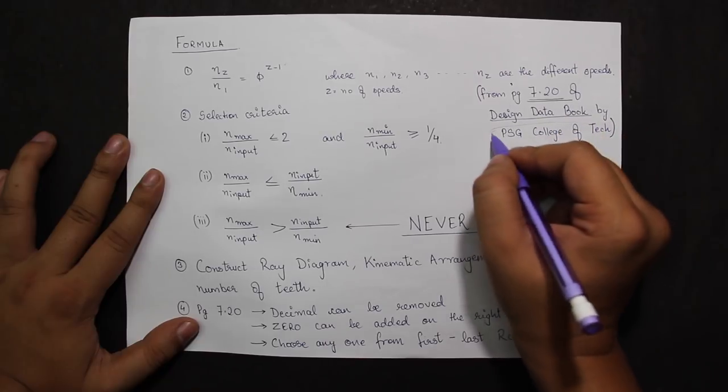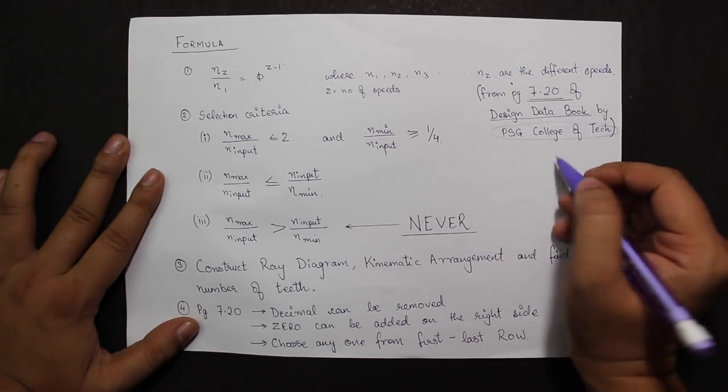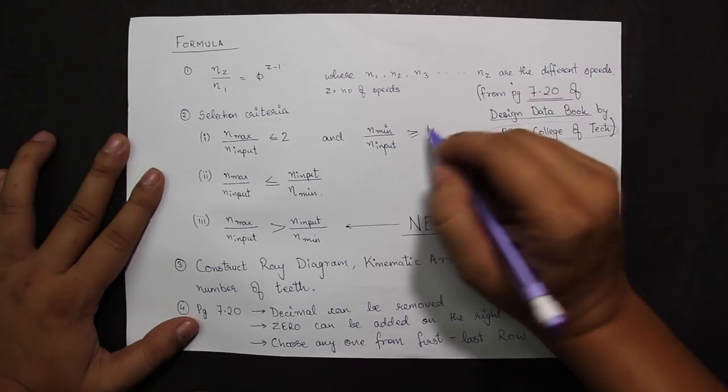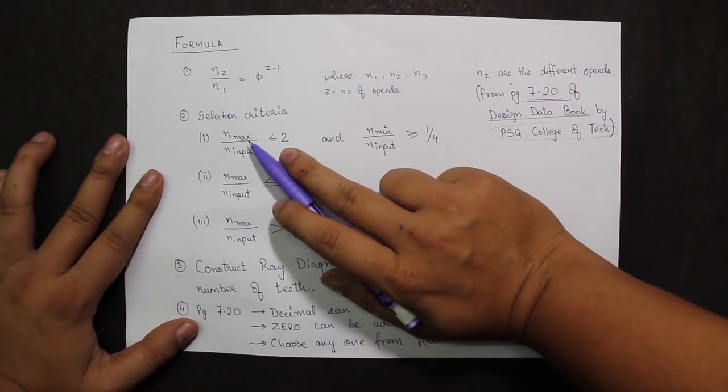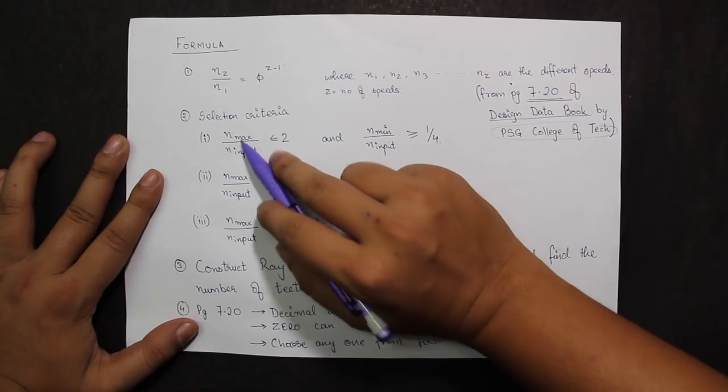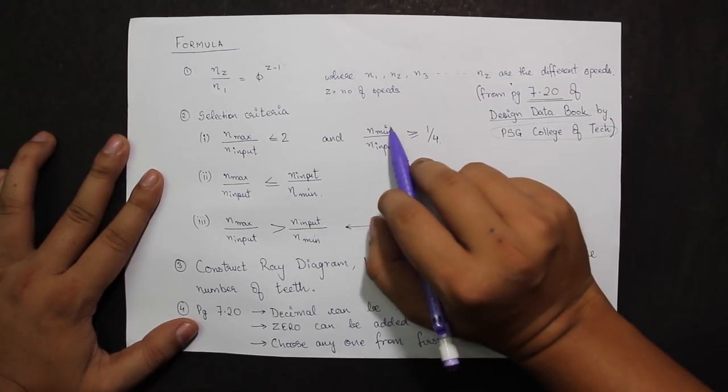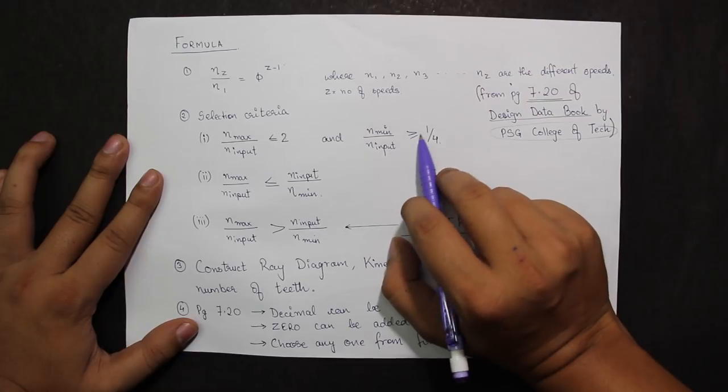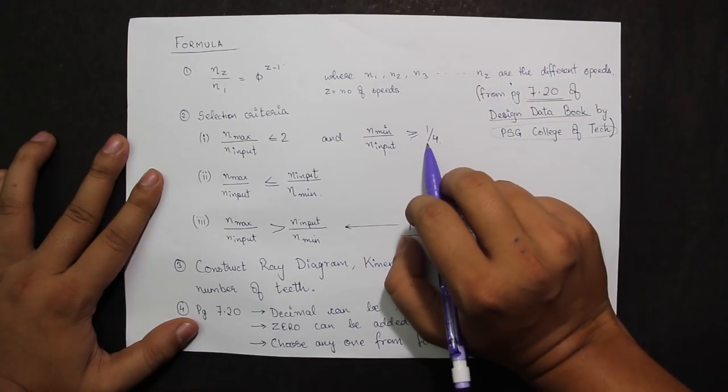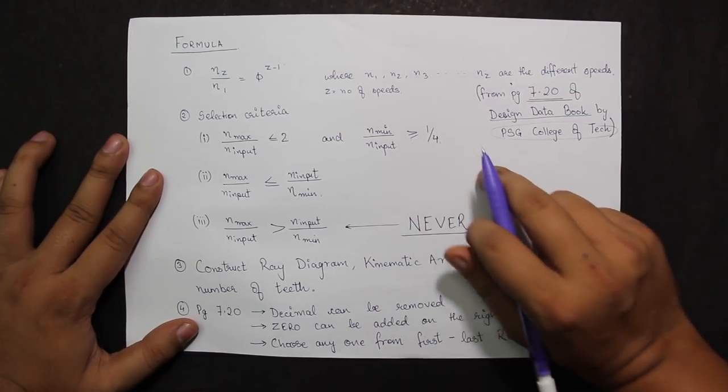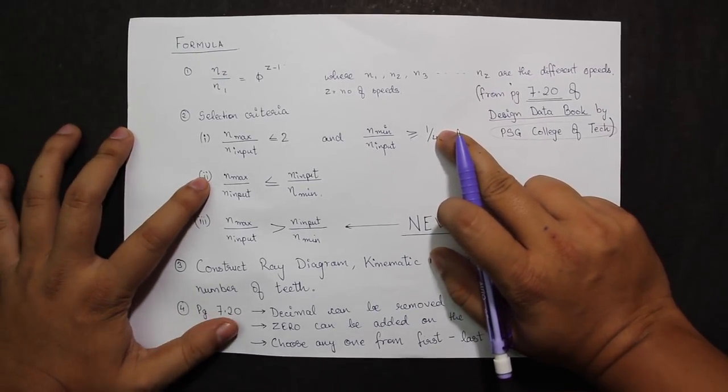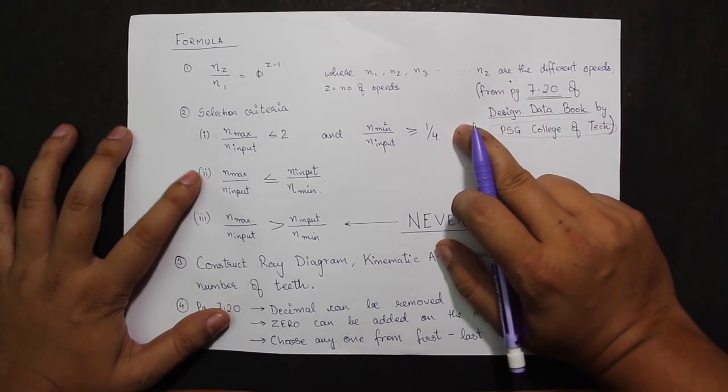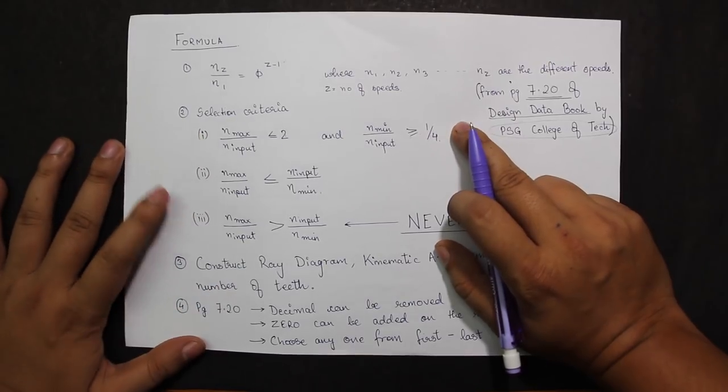The basic criteria when choosing the input speed for each stage is: maximum speed divided by input should be less than or equal to 2, and minimum speed divided by input should be greater than or equal to 1/4 or 0.25. If this case doesn't work, we can jump to case 2, but rarely. Stick with case 1 itself. Case 3 is never to be taken.